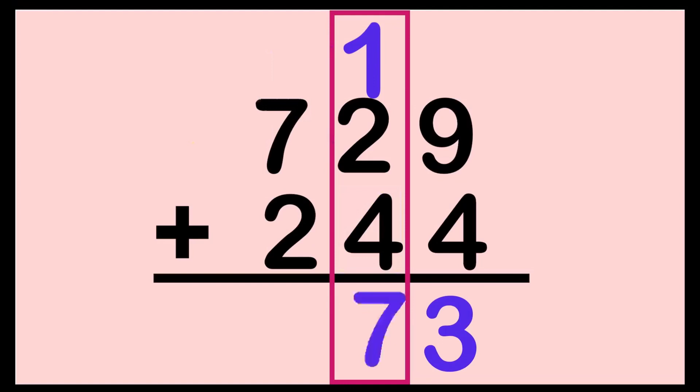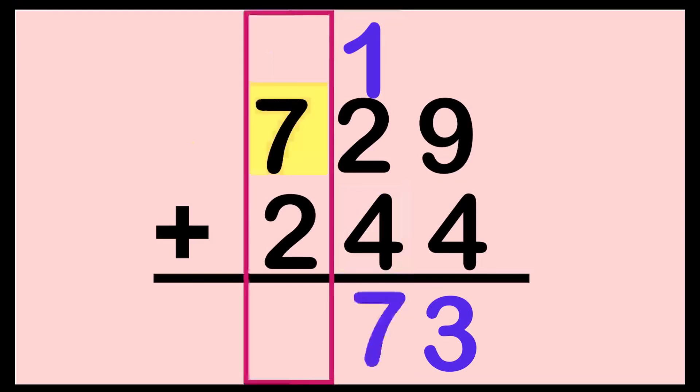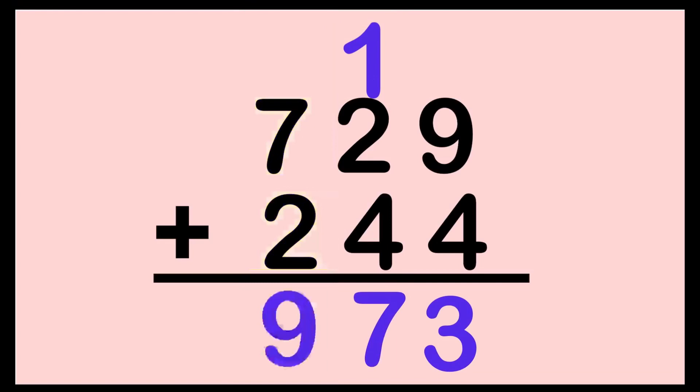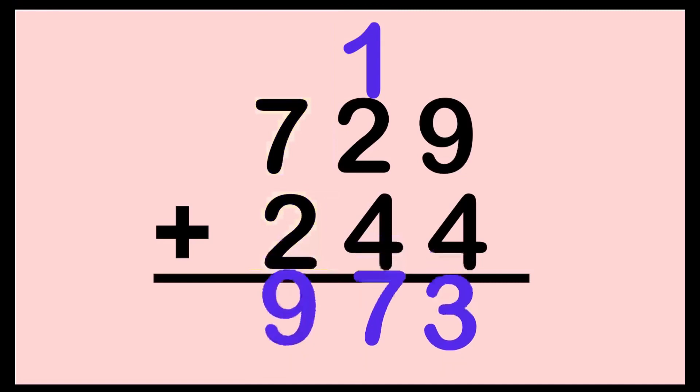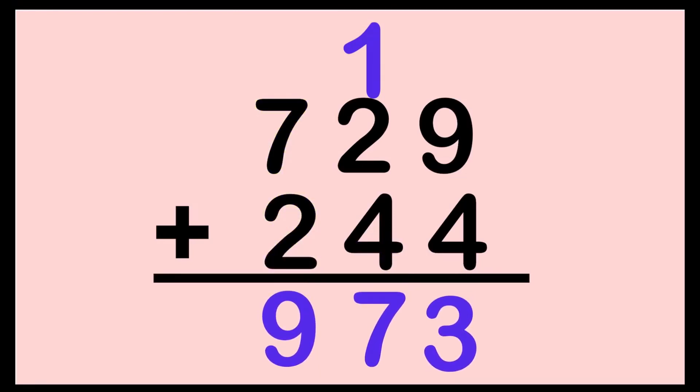Let's proceed now to the hundred's place. 7 plus 2 — put 7 on your mind, big number: 7, 8, 9. We have 9 here. So the sum of 729 and 244 is 973.